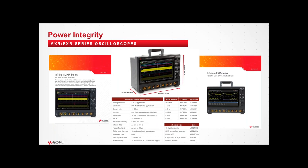The scopes used for these measurements are Keysight's MXR and EXR series oscilloscopes. They're available in an eight-channel version, which is fantastic for power rail measurements — the more channels, the better. Other useful built-in features include a DVM, protocol analysis, a waveform generator, and digital channels, all leveraged for power management work.